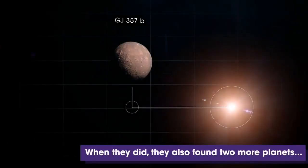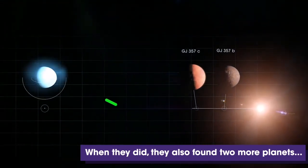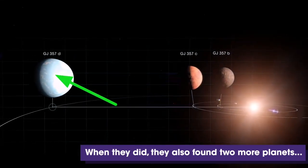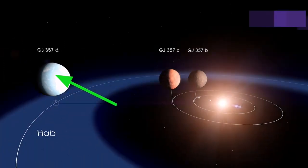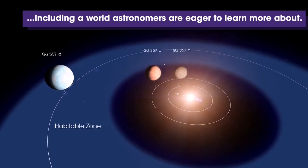Just look at this diagram, which is the layout of the GJ357 system. And here is GJ357D, which orbits within the star's habitable zone, the orbital region where liquid water can exist on a rocky planet's surface.